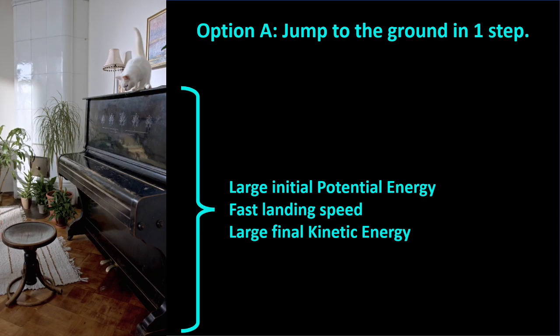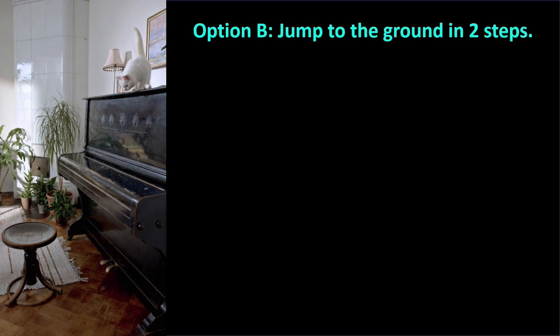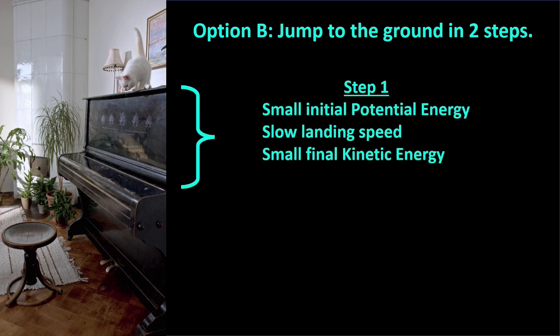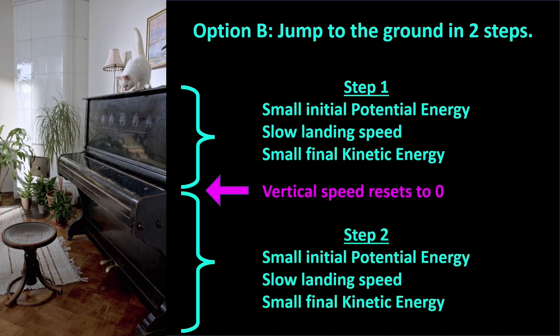This cat wants to get to the floor. If it chooses to do this in one step, it will have a large potential energy for that fall, which will cause a fast landing speed and a large amount of kinetic energy on its body, which could be harmful. Or the cat can choose to get down in two steps. The first step is a small height, so it has a small potential energy, causing a slow landing speed and a small amount of kinetic energy on the keyboard. Once it lands on the keyboard, it resets its vertical speed to zero. Likewise, the second step has a small height and small potential energy, causing a slow landing speed and small kinetic energy when it lands on the floor. The cat instinctively makes the safer choice, so its landing speed for each step is slower and it has a lower risk of injury.